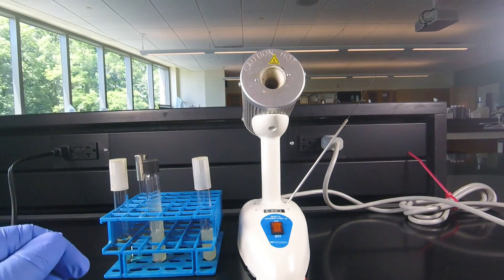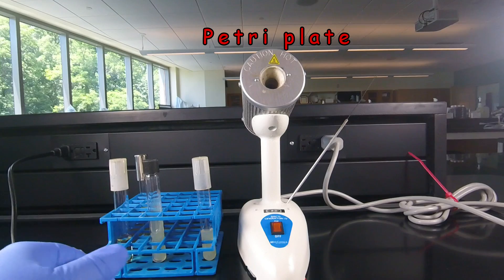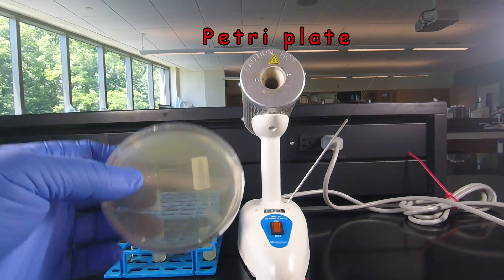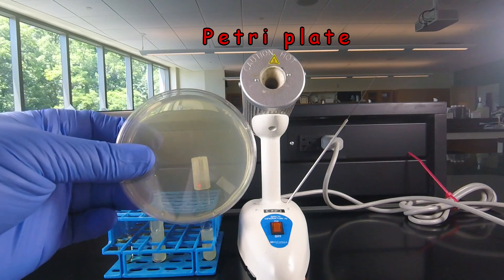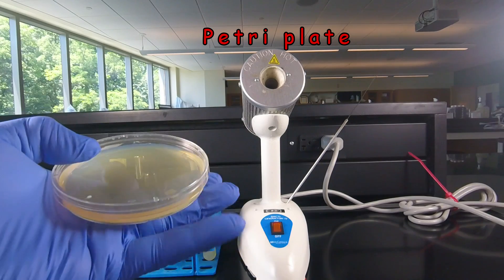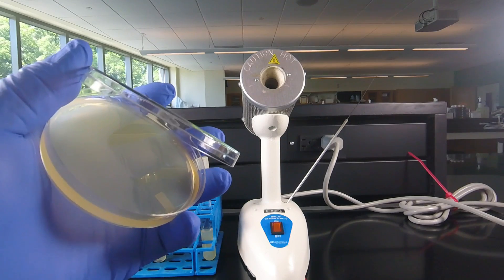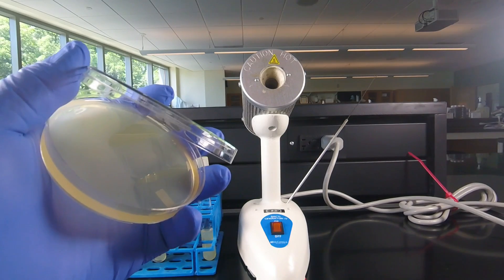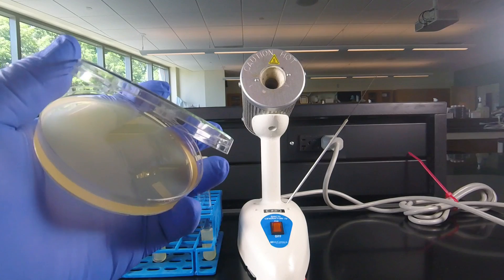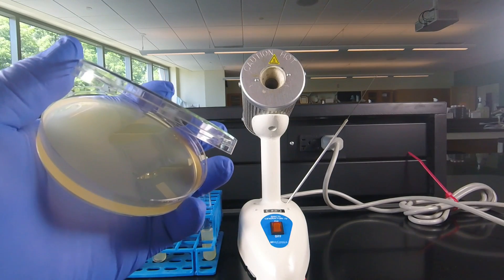And finally, and most frequently, we grow the bacteria on petri plates, such as we see here. The petri plates are nice because they provide a nice solid surface on which to grow microorganisms. And these are especially useful for separating bacteria to get isolated colonies that we'll be talking about in a later lesson.